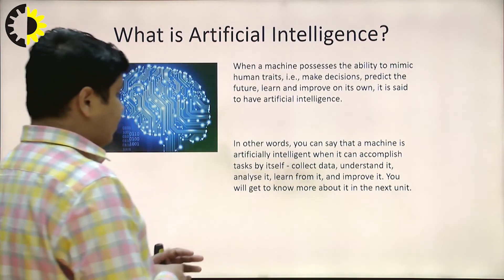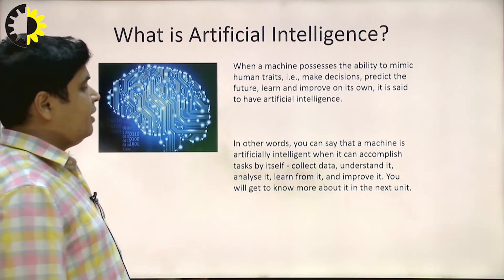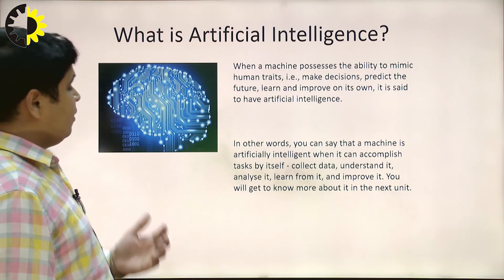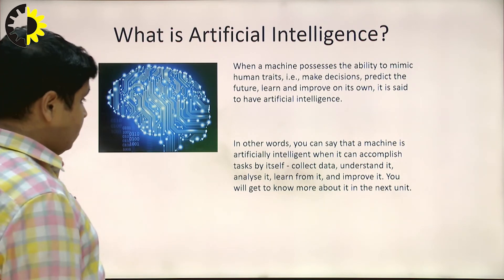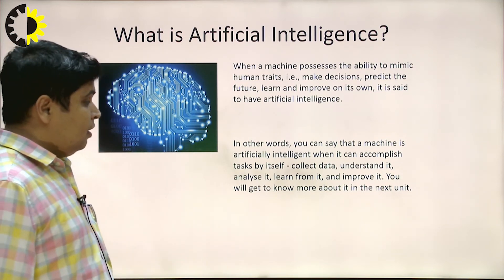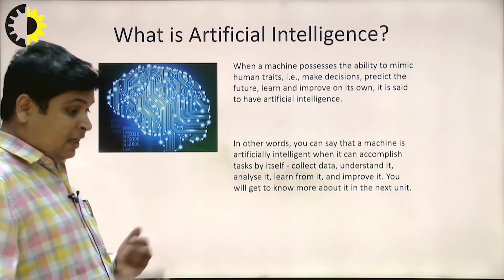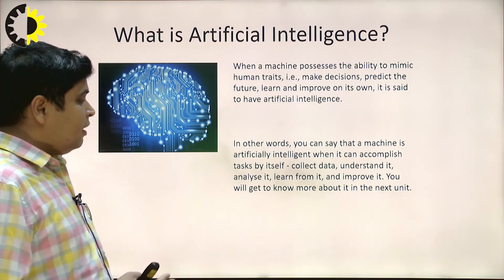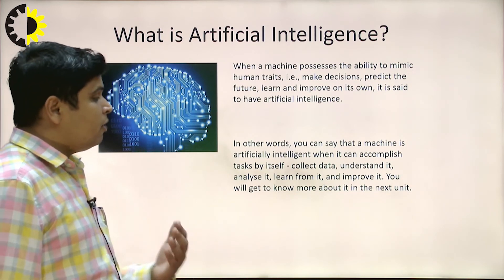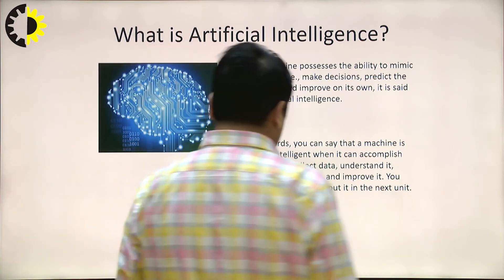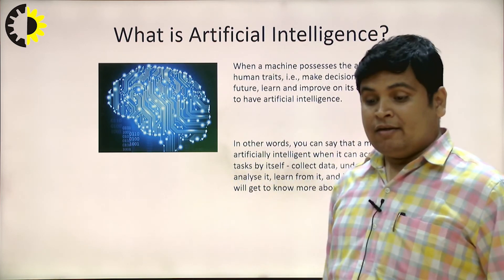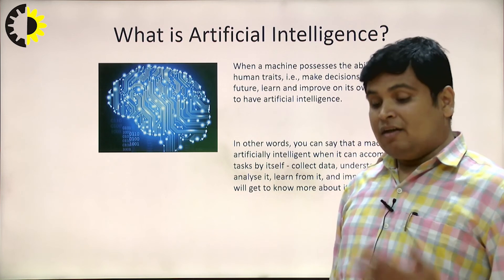In other words, you can say that a machine is artificially intelligent when it can accomplish tasks by itself — by collecting data, analyzing the data, understanding the data, and learning from it and improving. In the next unit you will get to know more about this, because the AI agent plays a very vital role — the agent is the machine we are designing.